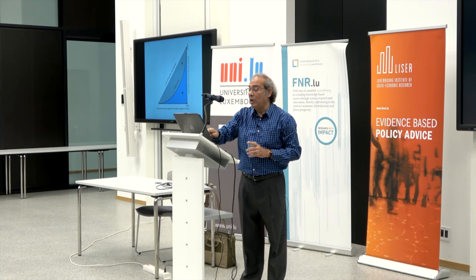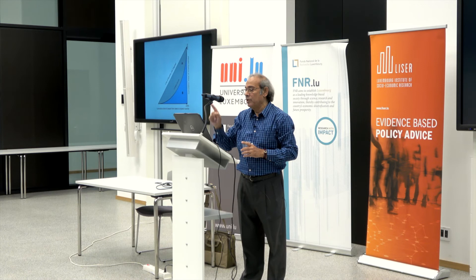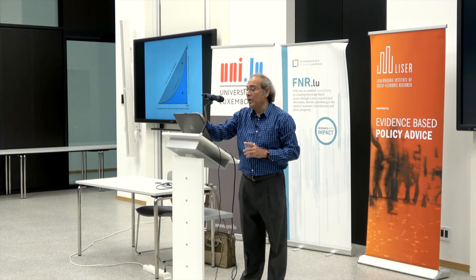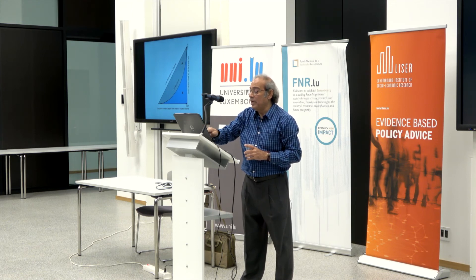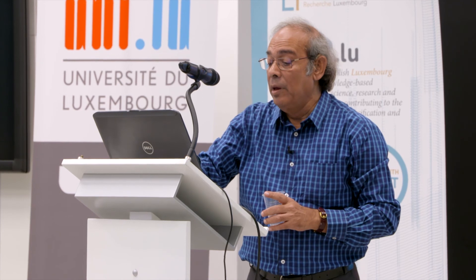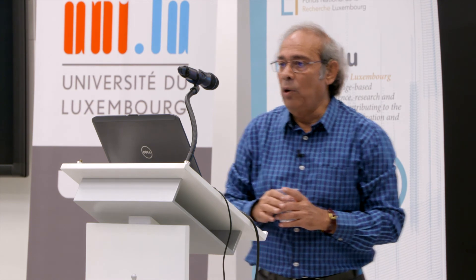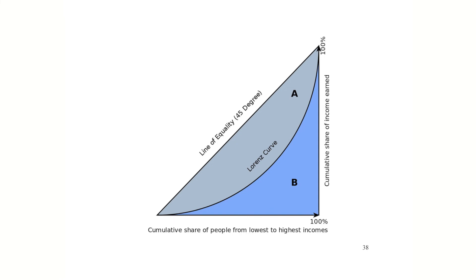When only one person has all the income and all others have zero income, this is the line of maximum inequality. The actual Lorenz curve lies between these extremes, plotting cumulative share of income against cumulative share of people from lowest to highest income. One attractive feature of the Gini is that the Gini coefficient equals 2 times the area between the Lorenz curve and the line of equality — the area of this region divided by the total triangle area (which is 0.5).